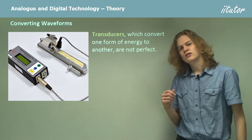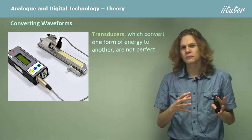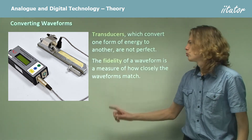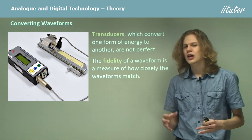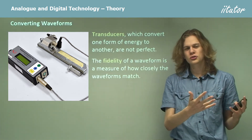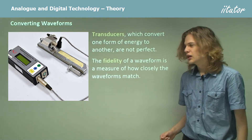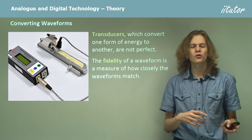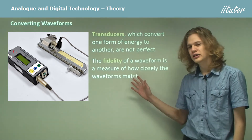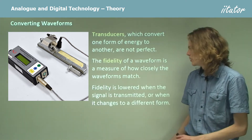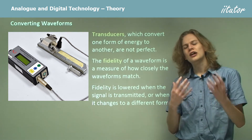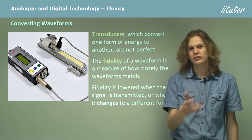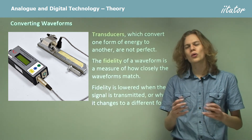The thing is, transducers are not perfect — there is no way to get a completely accurate copy of any sound. To measure how close the copy is to the original, we use a term called fidelity. High fidelity means the waveform produced is very similar to the original; low fidelity means it's similar in some aspects but not a completely accurate representation. High fidelity sound systems are sometimes called hi-fi. Fidelity is lowered whenever we transmit the signal or transform it, meaning longer distances or more conversions result in lower fidelity.